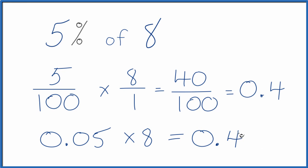Again, you could call it 0.40 if you want. So that's it. That's how you find 5% of 8. The answer, the decimal, 0.4.